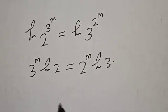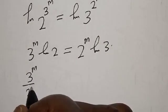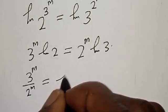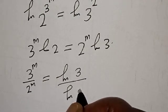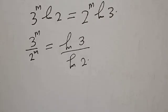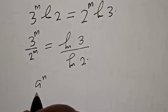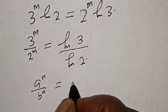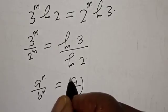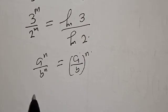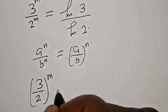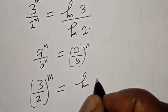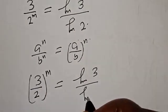Then we have 3 raised to power m over 2 raised to power m is equal to natural log of 3 over natural log of 2. Remember that a raised to power m over b raised to power m equals the ratio, giving us 3 over 2 raised to power m equals natural log of 3 over natural log of 2.